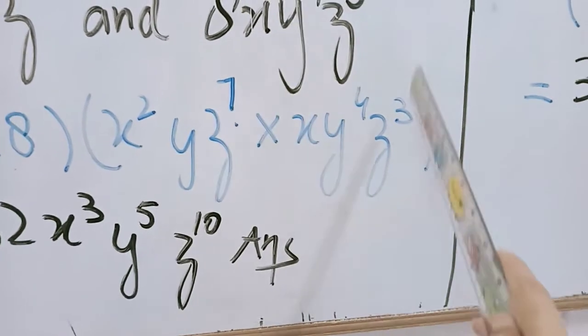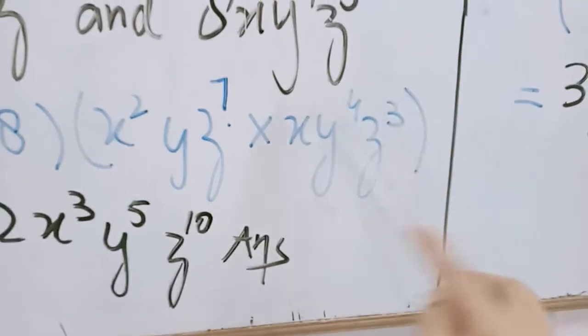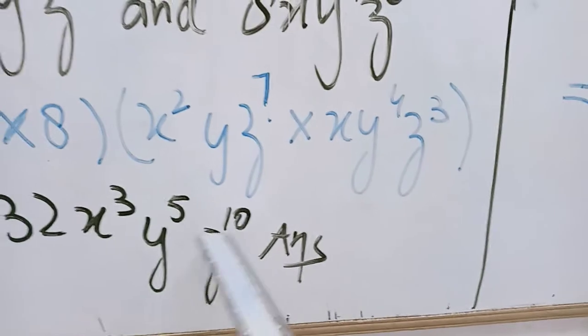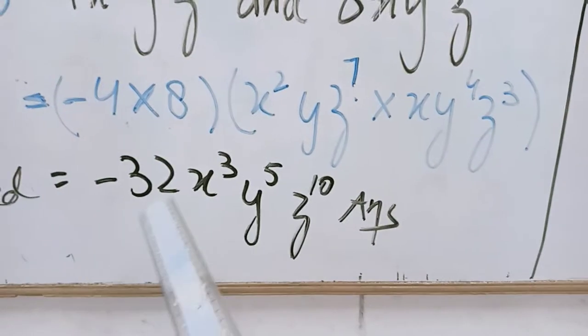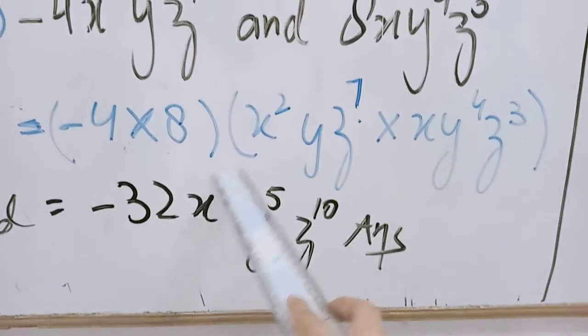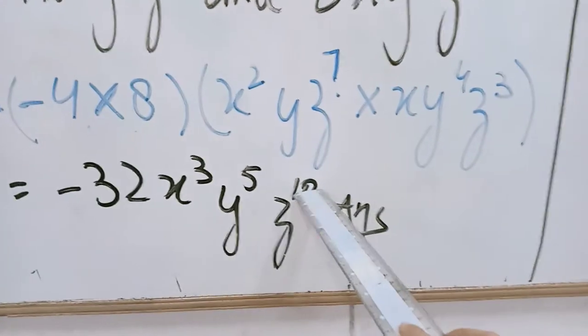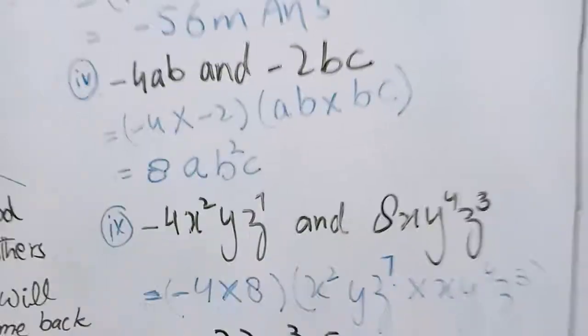Z raise power 7 and raise power 3, so z 7 plus 3 z is equal to 10. So the answer is minus 32x cube y raise power 5 and z raise power 10. This is your question number one and these are the parts of question number one.